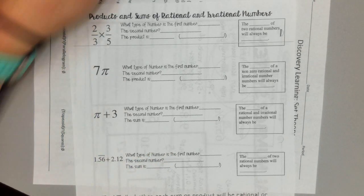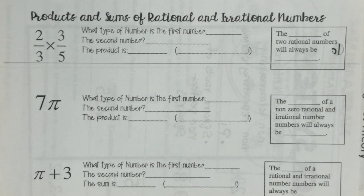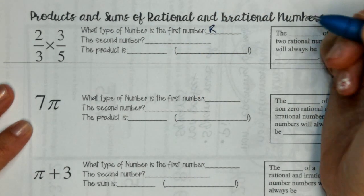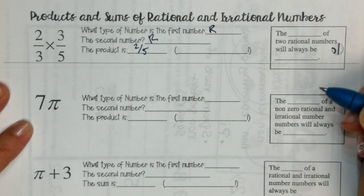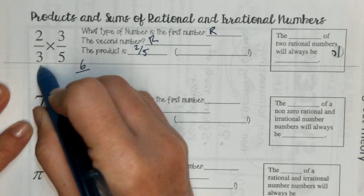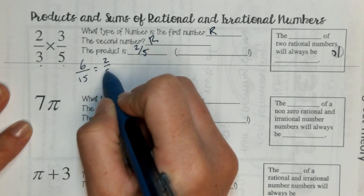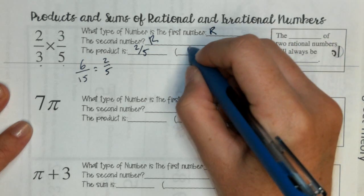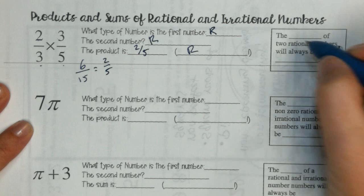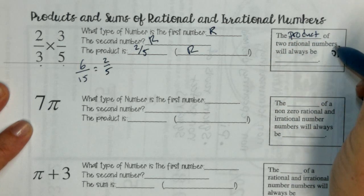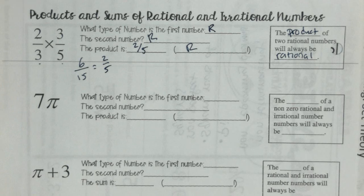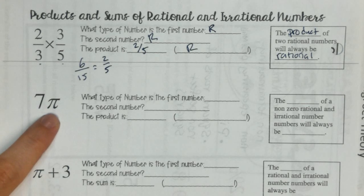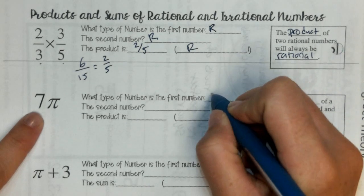So, these are two fractions. What kind of numbers are these fractions? Rational or irrational? Rational. So the first one's rational. We'll write an R for rational. The second one's rational. If I multiply them together, I get 2 fifths as my answer. 2 times 3 is 6. 3 times 5 is 15. That simplifies to 2 fifths. That fraction is a rational number. So, the product of two rational numbers will always be rational.